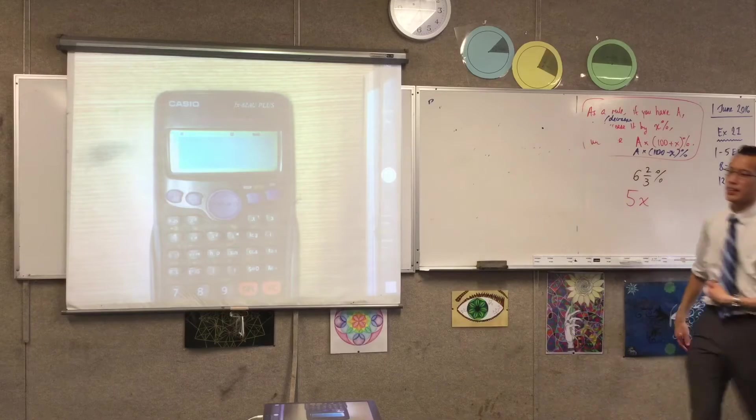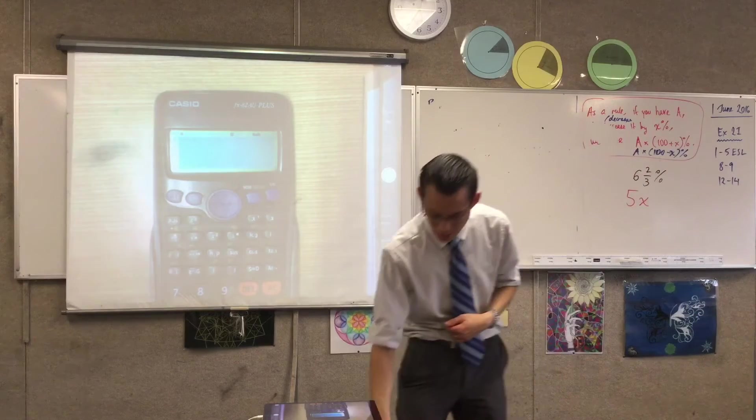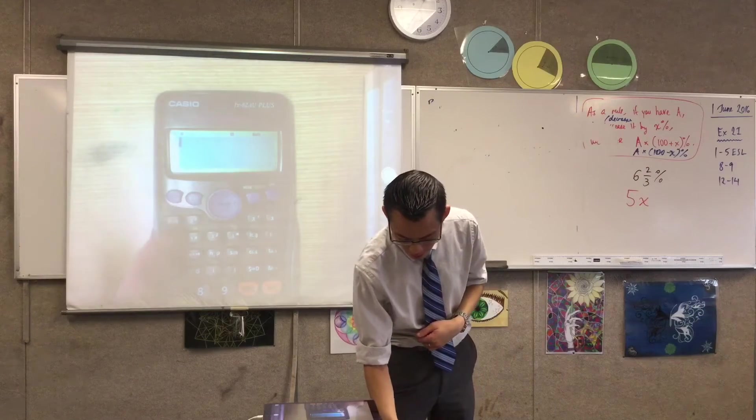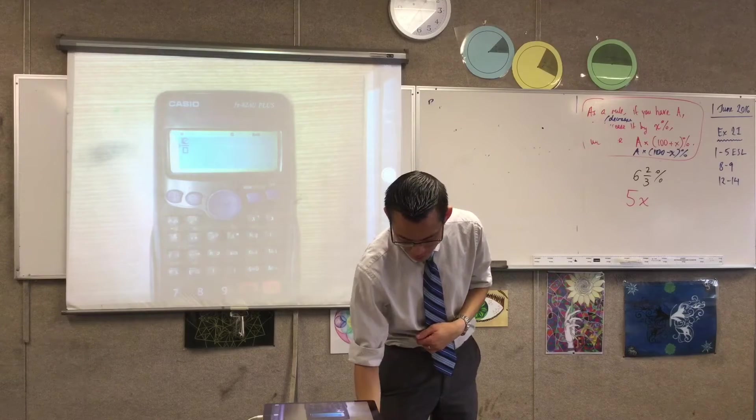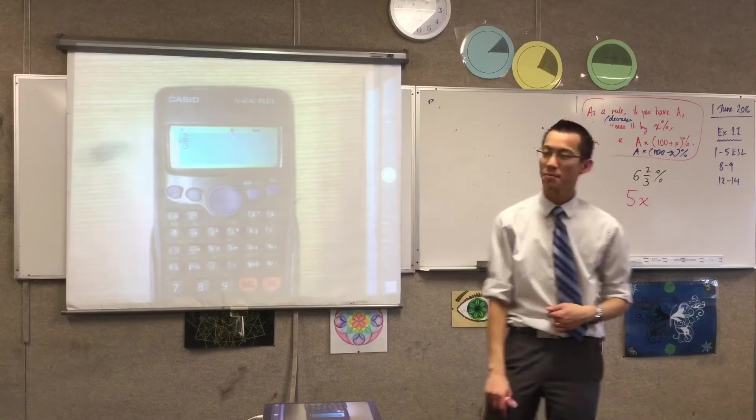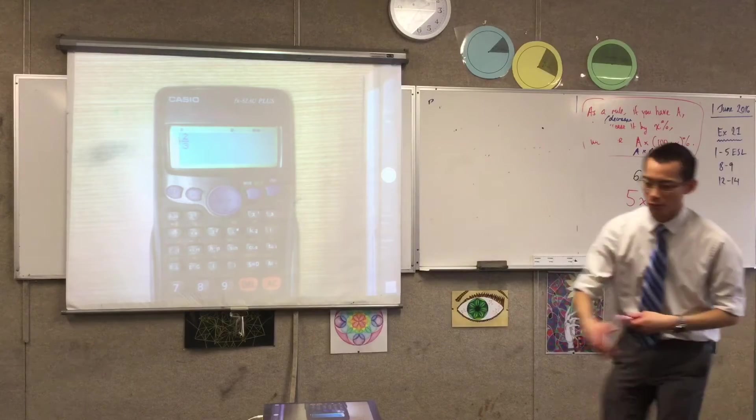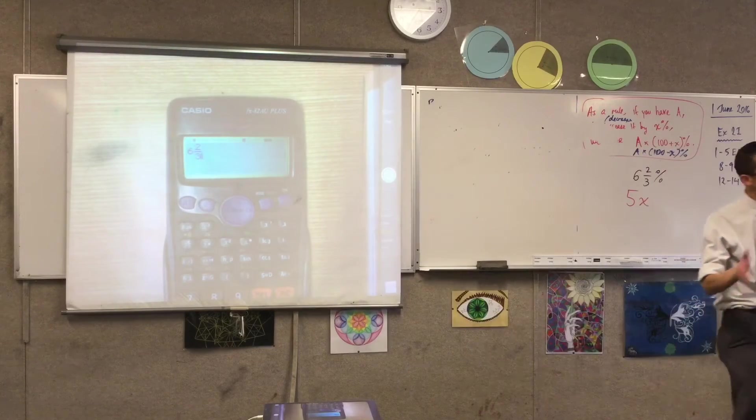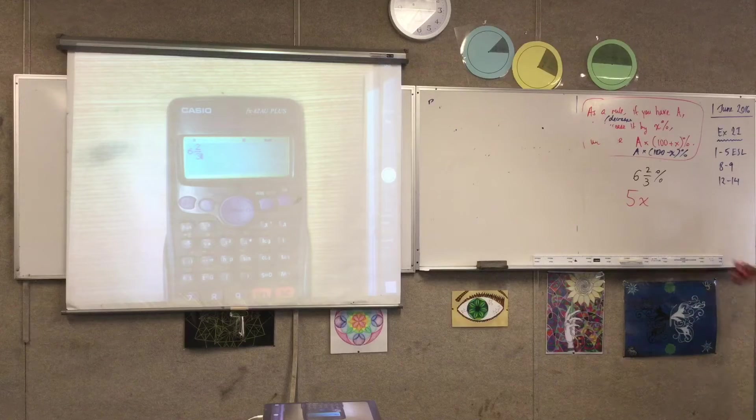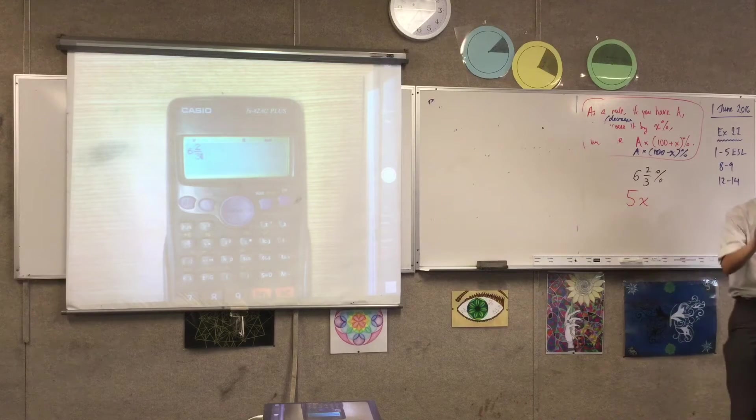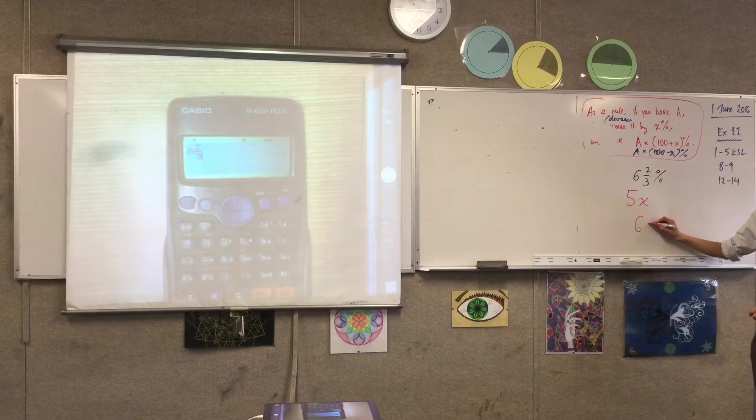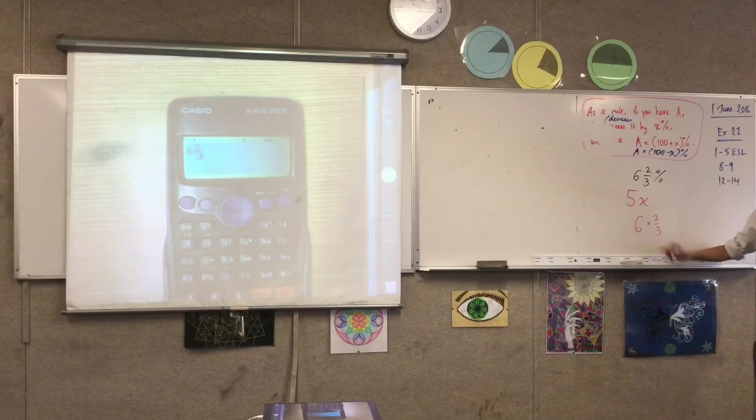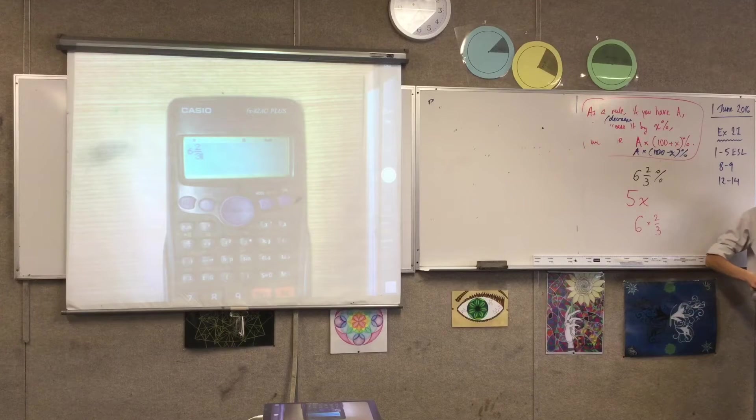So therefore, if you go to your calculator and you type in something like this, 6 fraction 2 thirds, that's not very helpful. What your calculator is actually seeing is not 6 and 2 thirds as a mixed numeral. It's seeing two numbers next to each other, so it thinks you mean 6 times 2 thirds, which is not actually what we want.